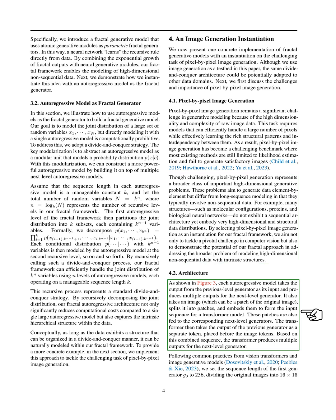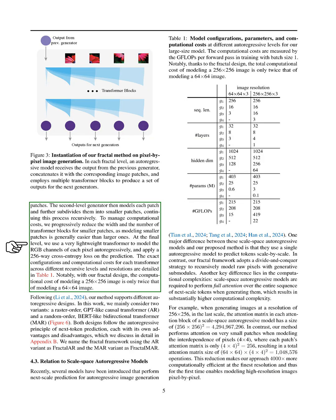Regarding our architecture, each autoregressive model takes the output from the previous generator and produces multiple outputs for the next one. We input an image, which can be a patch, split it into smaller patches, and embed these to create a sequence for a transformer model. The transformer uses the previous generator's output as a separate token, combined with the image tokens, to generate outputs for the next-level generator. We set the sequence length of the first generator to 256, dividing images into 16-by-16 patches. The second-level generator models each patch and further divides them recursively. To control computational costs, we reduce the width and number of transformer blocks for smaller patches. At the final level, we use a lightweight transformer to model the RGB channels of each pixel and apply a cross-entropy loss on the predictions. The configurations and costs for each transformer at different levels are detailed in our tables.